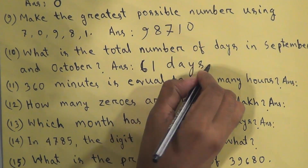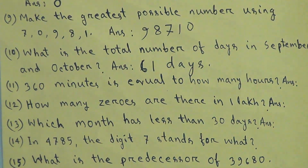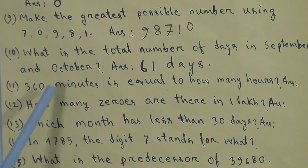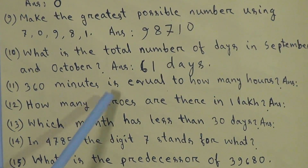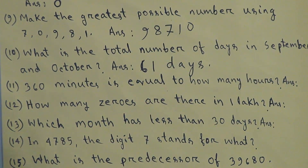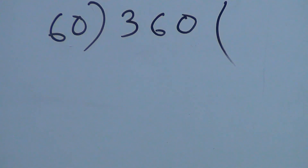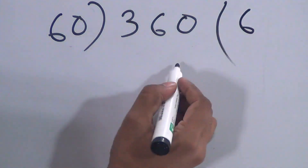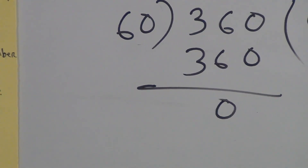Question 11: 360 minutes is equal to how many hours? We know that 60 minutes equals 1 hour. So we divide 360 by 60. 360 ÷ 60 = 6. Therefore, 360 minutes equals 6 hours. The answer is 6 hours.